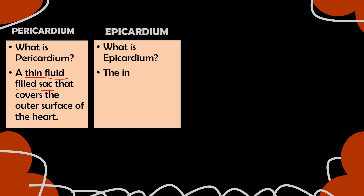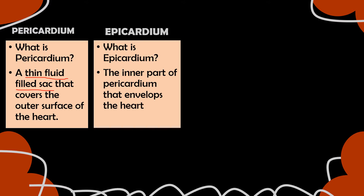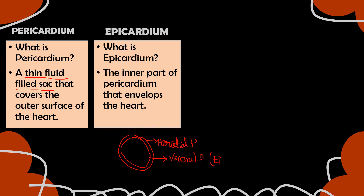What is epicardium? It is the inner part of pericardium that envelops the heart. The pericardium is actually a double-layered wall. The outer layer is called parietal pericardium, and the inner layer is called visceral pericardium. This visceral pericardium is also called the epicardium.